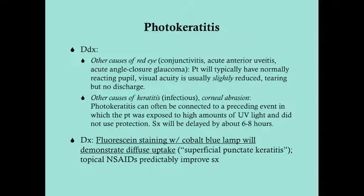Visual acuity is usually slightly reduced, which stands in contrast to acute angle closure glaucoma where vision will be extremely reduced — usually just to hand motions — and conjunctivitis where vision is not reduced at all. There may be tearing but there's never any discharge. Other causes of keratitis and corneal abrasion should also be in your differential, but photokeratitis can often be connected to a preceding event, especially if the patient was skiing, snowboarding, or snowmobiling and didn't use UV protection.